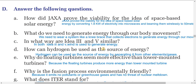Question d: How can hydrogen be used as a source of energy? Hydrogen can be used as a source of energy by separating it from other elements like oxygen and nitrogen, since all gases are combined in the atmosphere. Question e: Why do floating turbines seem more effective than tower-mounted turbines? Floating turbines seem more effective because they produce more energy than tower-mounted turbines.